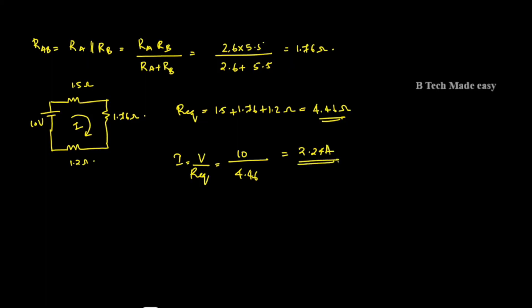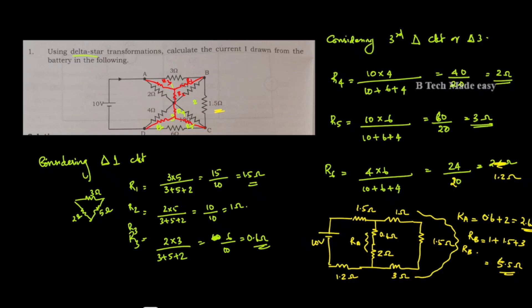The current I equals approximately 2.24 amperes. The delta-star transformation problem is now fully solved.